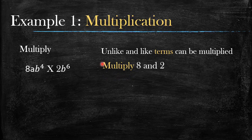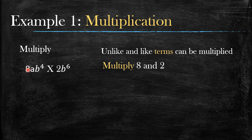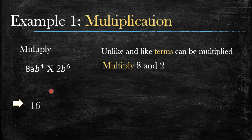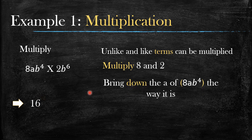Let's start with the number parts. We have 8 here — it's a number. When we look on the other side of the multiplication sign, there's a 2. So we multiply: 8 times 2 gives you 16.